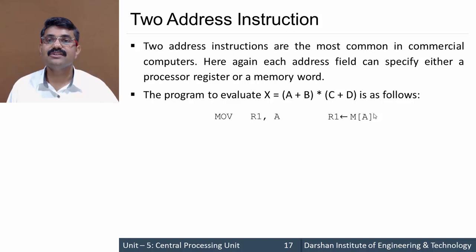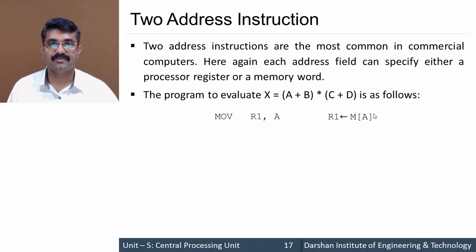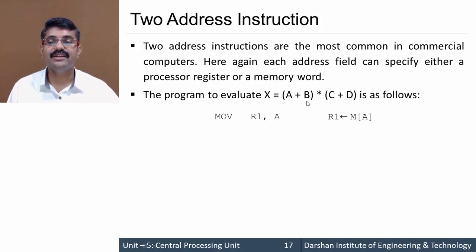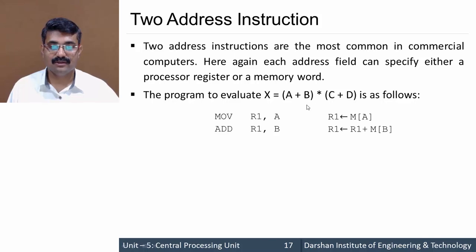Note that the set of instructions here is different from what we studied in the previous chapter — the number of instructions depends on the designer of the processor. The MOV instruction transfers the content of memory at address a to register R1. Then we add b directly to R1: ADD R1, b, giving R1 ← R1 + M[b]. So R1 now contains a + b.